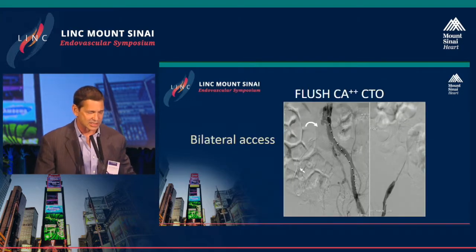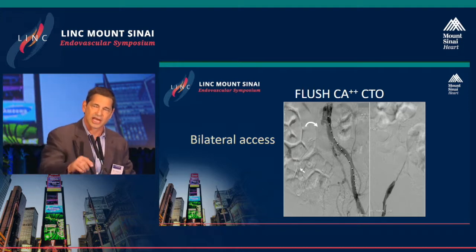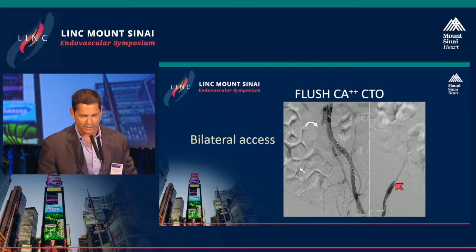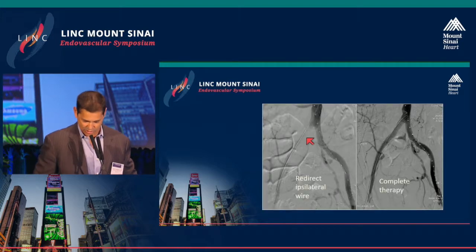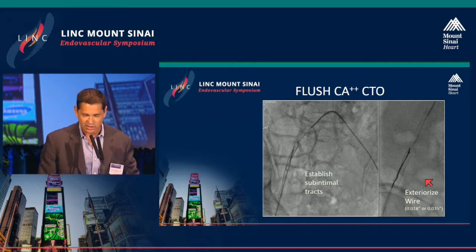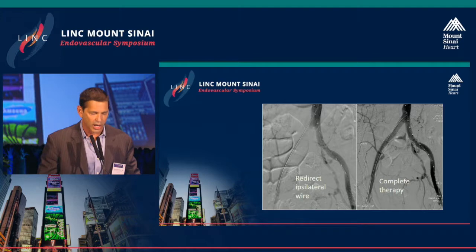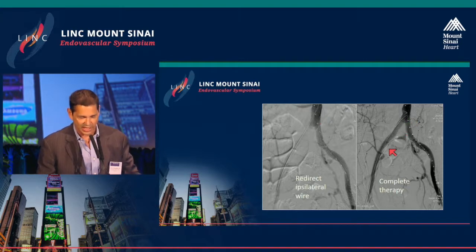Looking at how we approach complex iliac lesions technically — here's a flush occlusion of the common iliac. Generally you want to approach these from a contralateral approach; it's easier to cross these lesions antegrade than retrograde. You can see this tapered occlusion on the bottom half of this lesion. In this case we established subintimal tracks top and bottom, crossing from both directions. Similar to what we just saw live, this allows us to, within that subintimal track, engage the wire — passing it through a catheter and exteriorizing it, or snaring it. Once we exteriorize it, whether it's a 0.018-inch or 0.035-inch wire, we can redirect that ipsilateral wire up into the aorta and complete this with a balloon expandable stent or stent graft, with the goal to preserve the hypogastric.